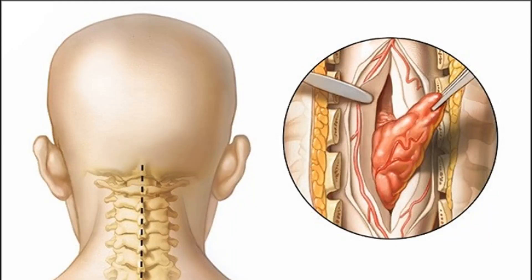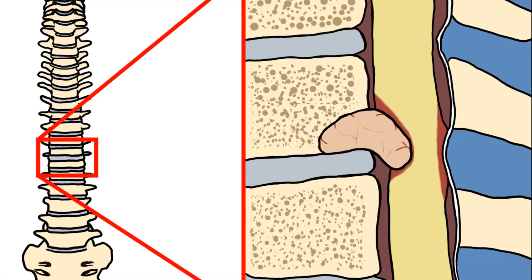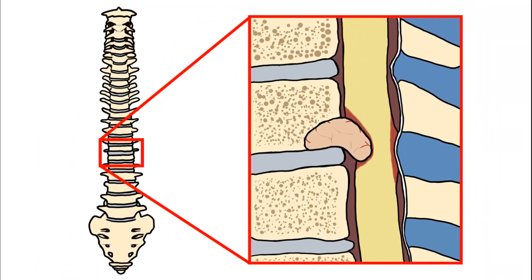For surgical treatment, you can have a posterior approach or an anterior approach where you remove the vertebral bodies. You can do decompression where there is compression on a nerve root or the spinal cord, or do excision and fixation to stabilize the spine. That's it for this video — see you in the next one, take care, bye!